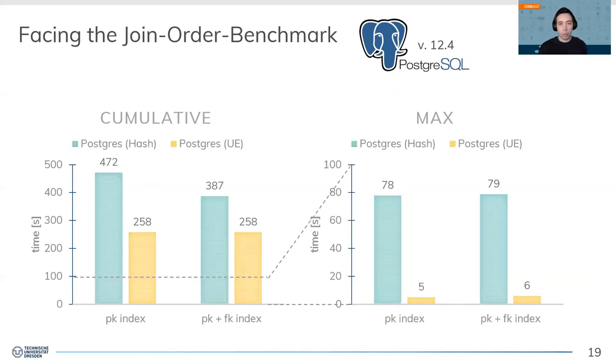Yet, our enumeration approach is agnostic to Postgres's fine-tuned cost model and only relies on applying hash joins. To rule out the influence of the join operator, we force Postgres as well to only use hash joins, which again confirms that we achieve a superior join order and circumvent very long-running queries.